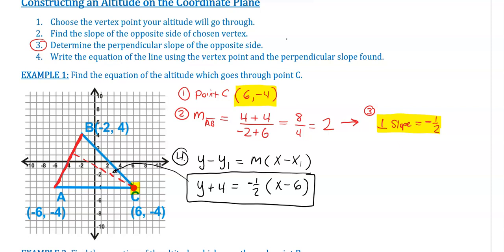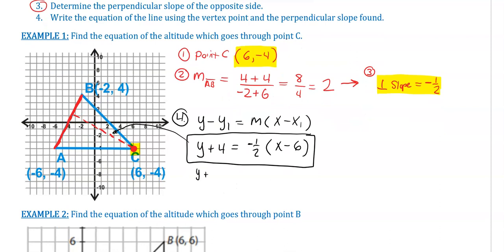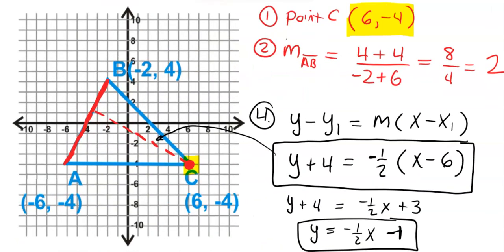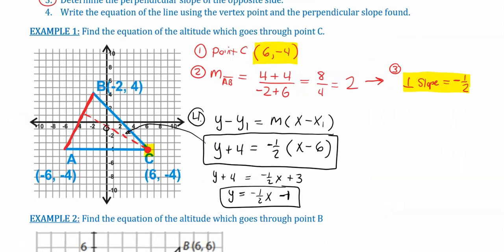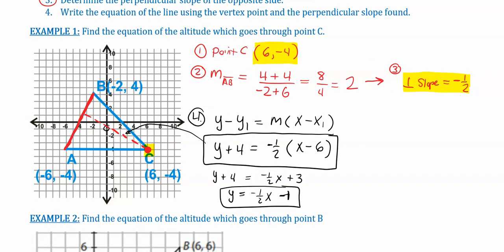If you wanted to validate this, converting to slope-intercept form by distributing and subtracting gives y = −1/2x − 1. That's good to check because if you look at the sketch, it does go through a y-intercept of −1. That's a good sign we got the correct answer — you could also plot this on Desmos as another validation.